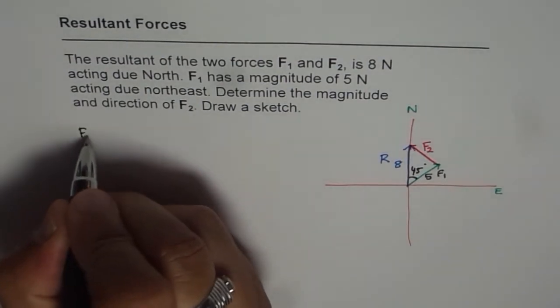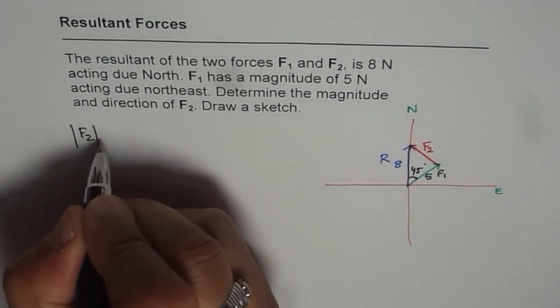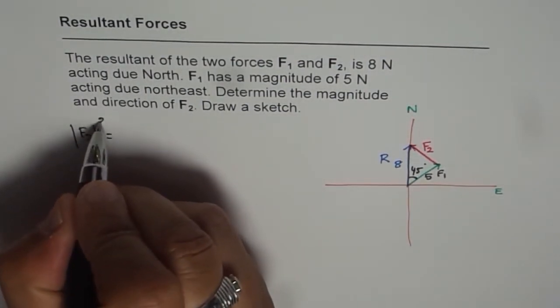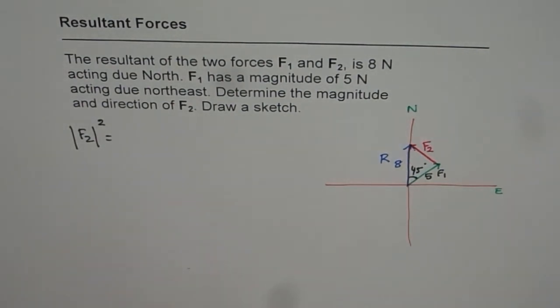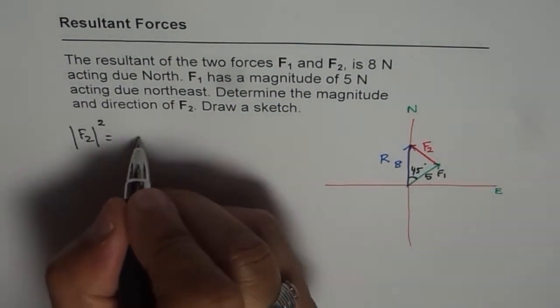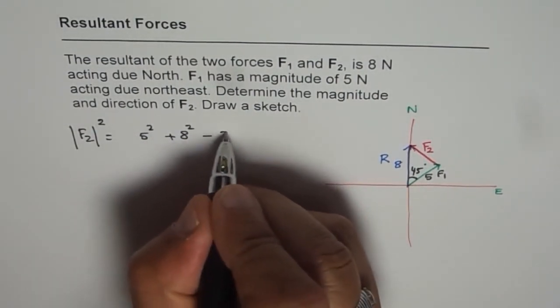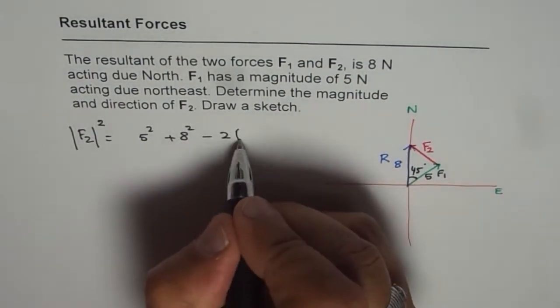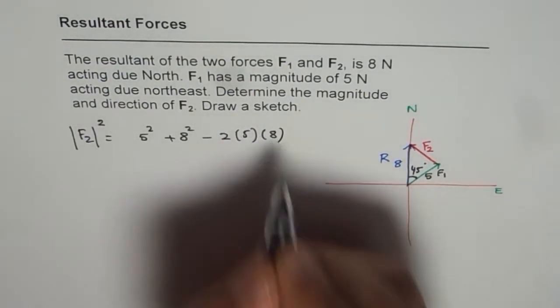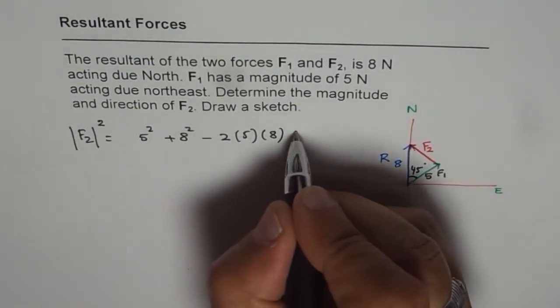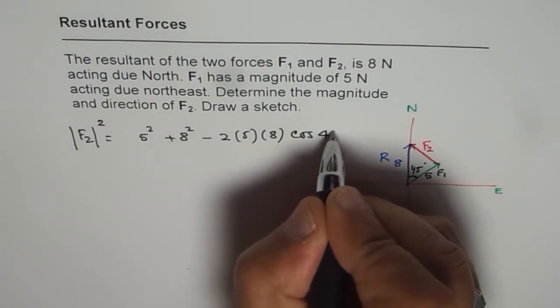So F2, the magnitude of F2 is equal to, let me write F2 square first and we'll square root it. The square of these two sides which is 5 square plus 8 square minus 2 times 5 and 8 times cosine of the angle in between which is cos of 45 degrees.